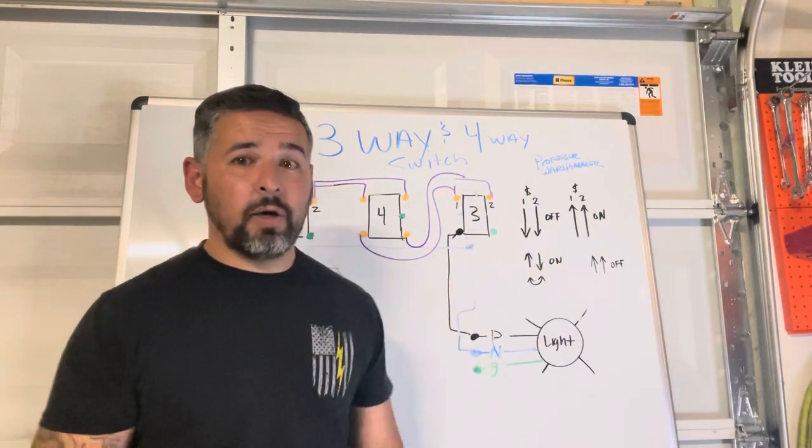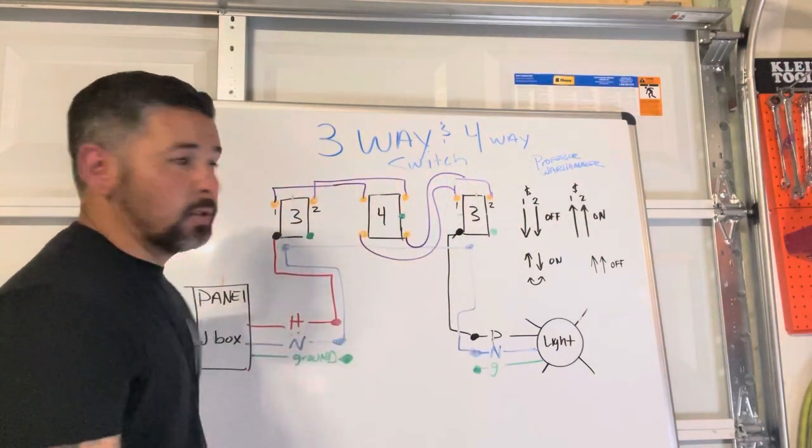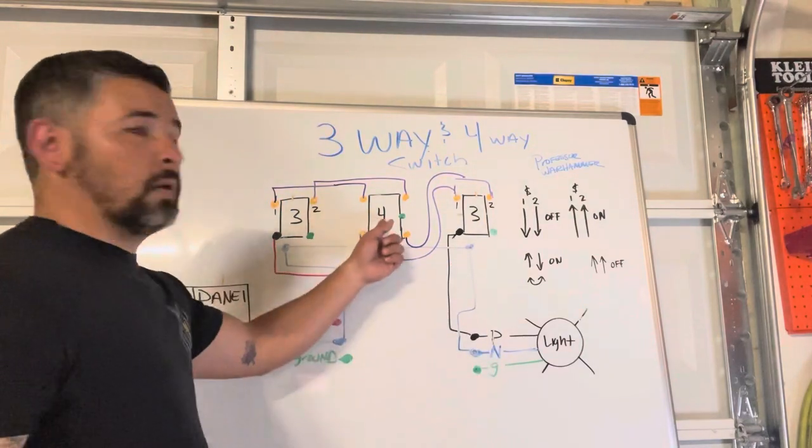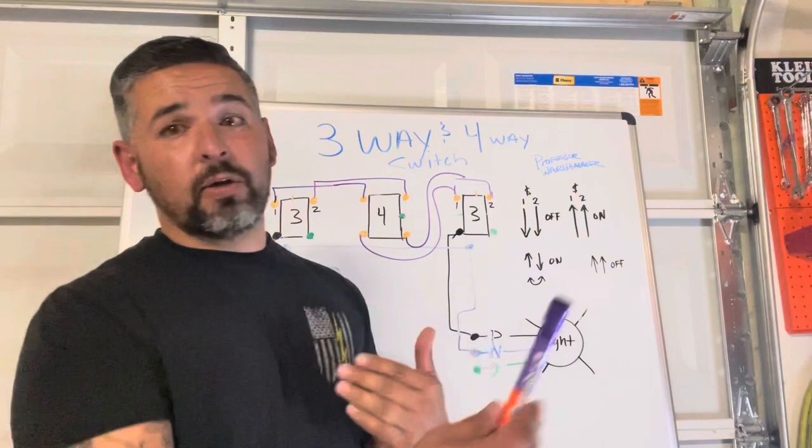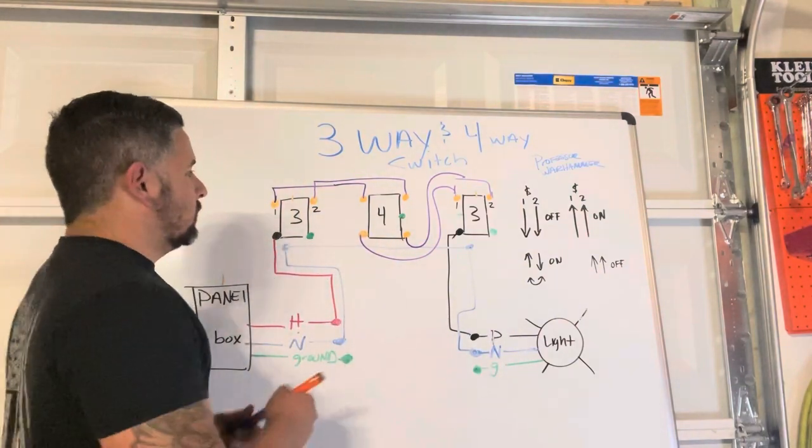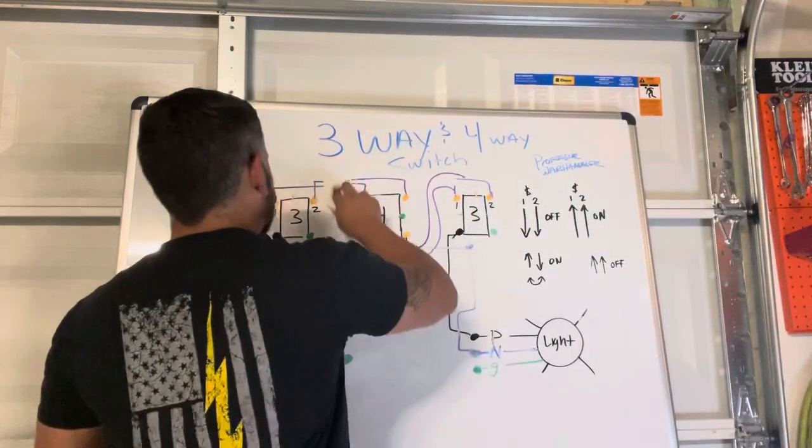Fun fact: you can have as many four-ways as you want in between two three-ways. You have to have the two three-ways, and you can have as many four-ways as you want in between that area. I hope that makes sense.